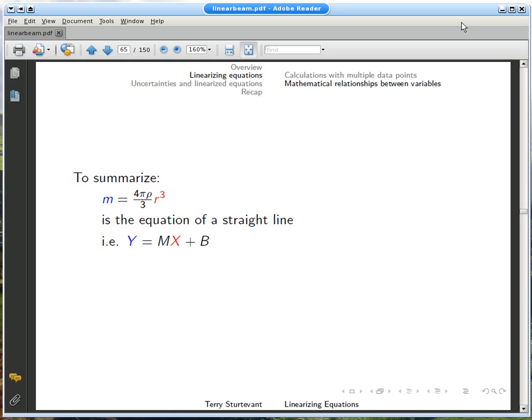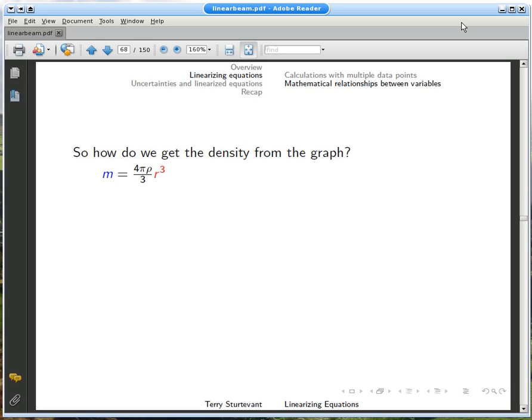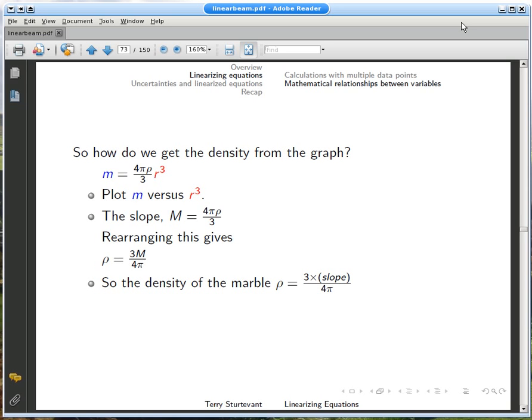So, if we plot mass versus radius cubed, then the slope will be 4 thirds pi times the density. The y-intercept should be zero. Since the slope should be 4 thirds pi times the density, the density should be just 3 times the slope over 4 pi. The density comes just from the slope. Mass and radius are gone.